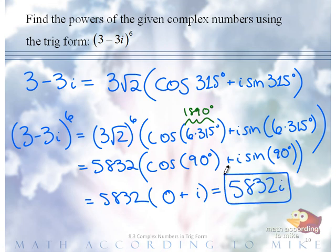So, 3 minus 3i raised to the 6th power is 5,832i.